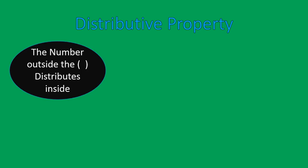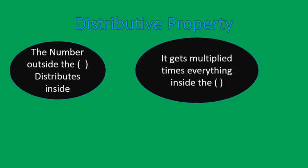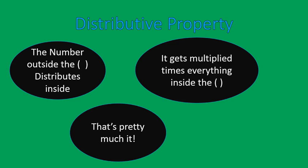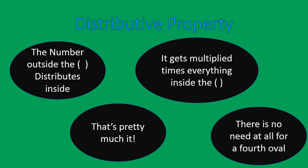Distributive property — this is when the numbers outside the parentheses distribute into the parentheses. It gets multiplied times everything inside the parentheses, and that's pretty much it. There's absolutely no need for this fourth oval, and I've done that twice, which is just even more funny.